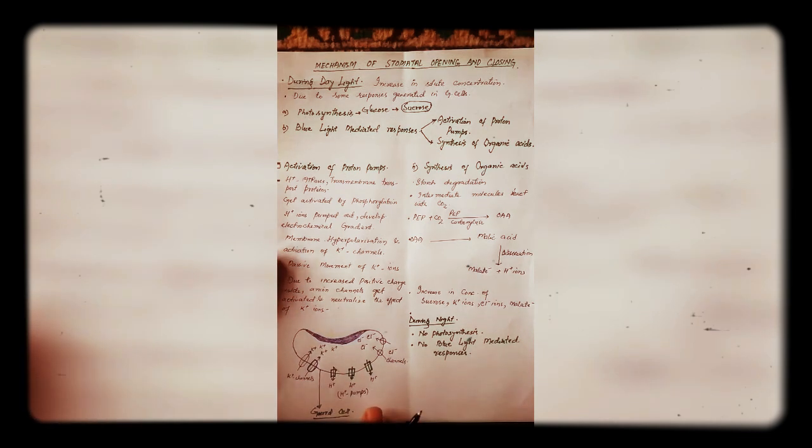Asalaam alaikum. Today we will talk about the mechanism of stomatal opening and closing — how stomata open during the day and how they close during night. In the previous lecture we saw that stomatal opening and closing is due to the variation of turgor pressure during day and night, and that the variation in turgidity of guard cells is due to increase and decrease of solute concentration during day and night respectively. In this lecture we will see how this variation in solute concentration occurs during day and night.